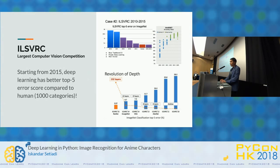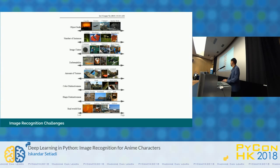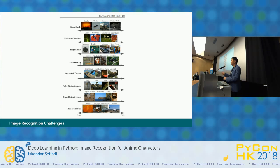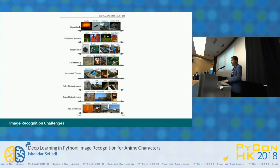The interesting part about image recognition is it has a lot of challenges — from object scale, where you don't know whether an object is small or large in an image, to the number of instances inside an image, to deformability — for example, rubber can be deformed. You also don't know about color, shape, lighting, and so on. There are a lot of issues related to image recognition.